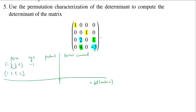Now let's compute the products. In both cases I have 1 times 1, which gives 1. In the first permutation I also have 2 times negative 3, which is negative 6. In the second permutation I have 4 times 1, which gives 4. Multiplying sign by product: negative 1 times negative 6 is 6, and positive 1 times 4 is 4. The determinant is the sum of these: 6 plus 4 equals 10. Therefore, the determinant of the matrix is 10.